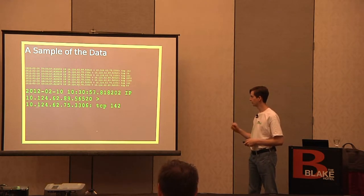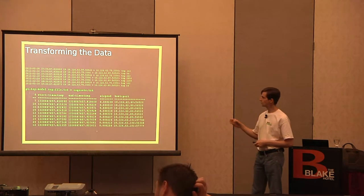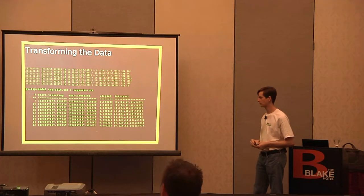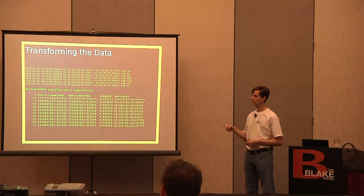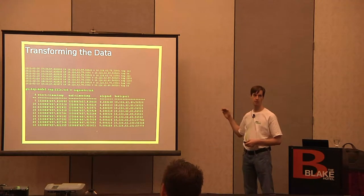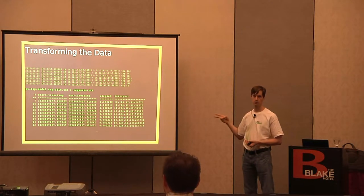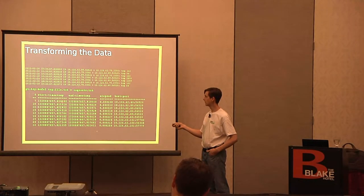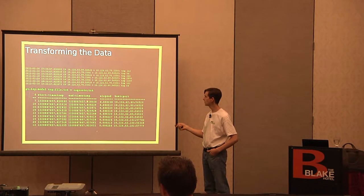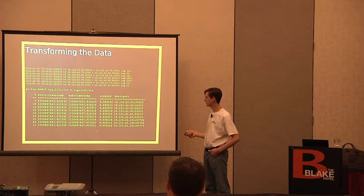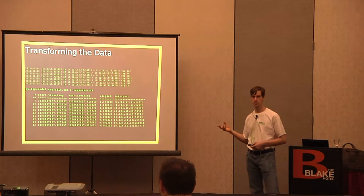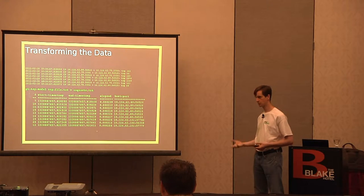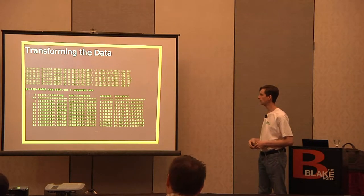This Perl tool is called pt-tcp-model, part of Percona Toolkit — free, open source, downloadable from percona.com. By default, if you give it the tcpdump output file and redirect to another file (say requests.txt), it finds correlated pairs of packets and puts them into a single line. The result includes the start timestamp, the end timestamp, the elapsed time (here 238 microseconds between them), and the host/port. You can see how it takes each pair of related lines and produces a single output line, making it convenient for further processing with Unix command line tools.